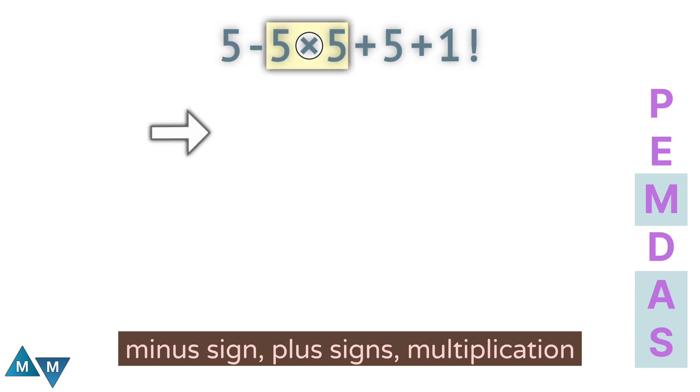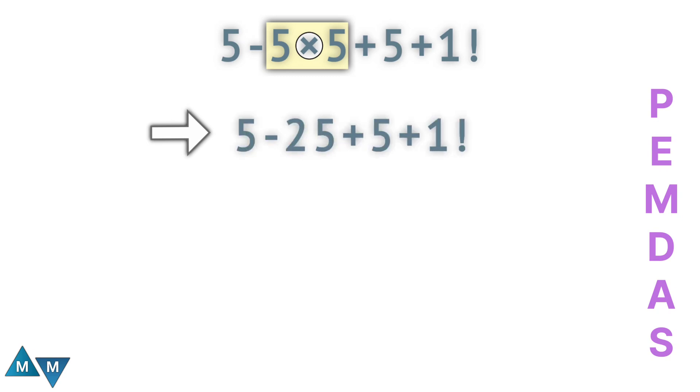So 5 times 5 will be our first move, which is equal to 25. Now the expression becomes 5 minus 25 plus 5 plus 1 factorial.